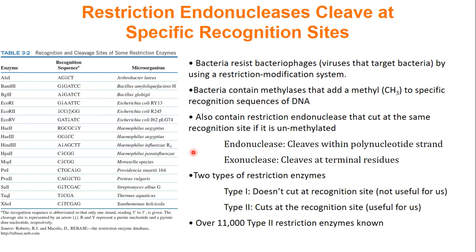There are two different classes of nucleases. Endonucleases cleave within the polynucleotide strand, and in biochemistry that's mainly what we use. Exonucleases cleave the terminal residues. Remember: 'endo' means inside, 'exo' means outside — so endo cleaves within, exo cleaves the terminal.